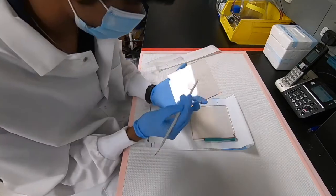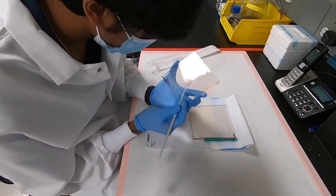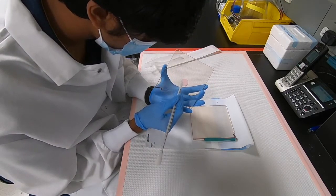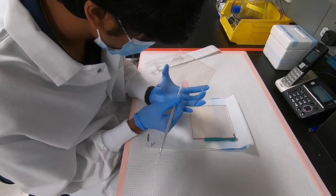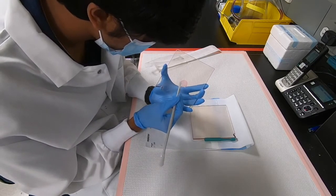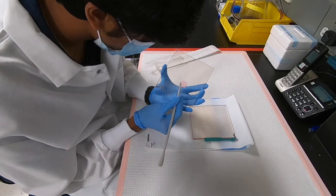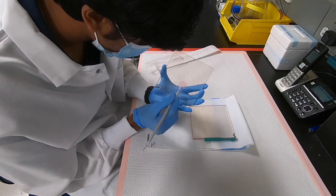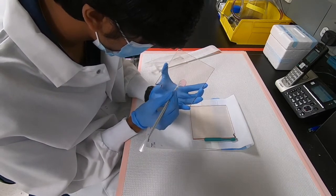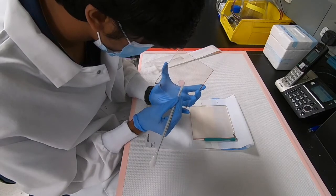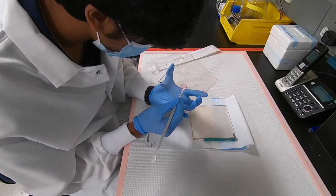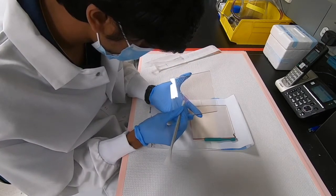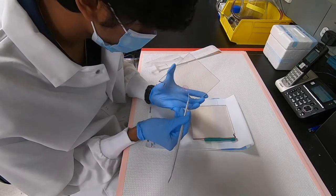Now that we have cut our discs, we would want to separate the discs from the whole gel. We are doing this using a spatula. Again, this might be a little tricky at first, but with enough practice, it will be pretty straightforward.